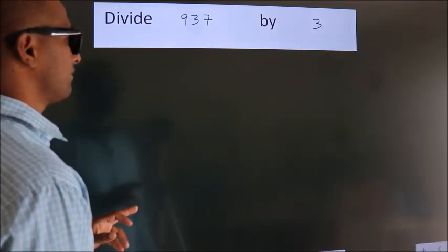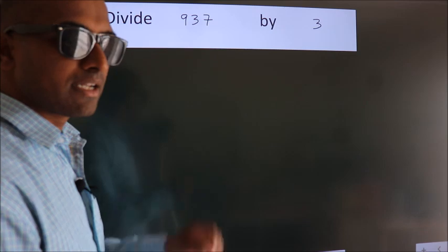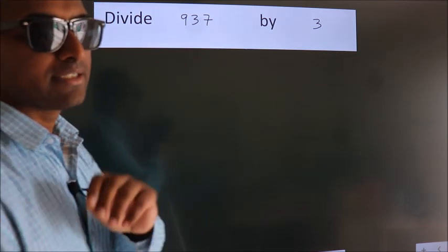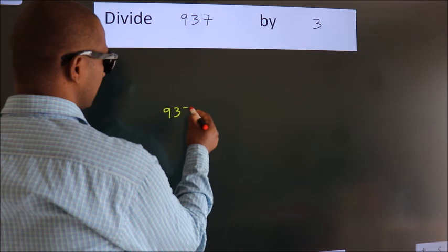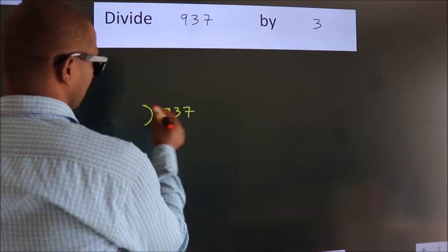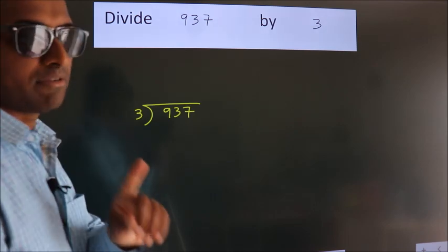Divide 937 by 3. To do this division, we should frame it in this way. 937 here, 3 here. This is your step 1.